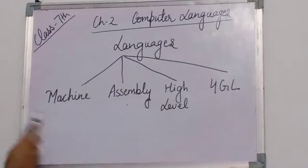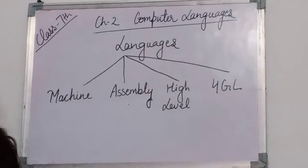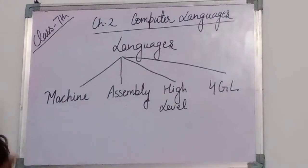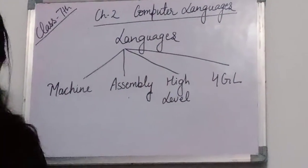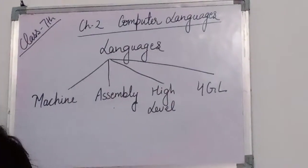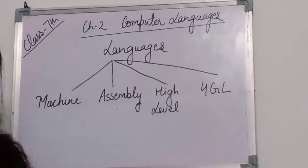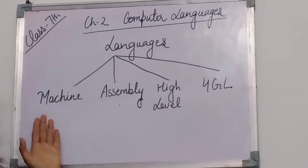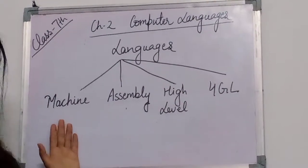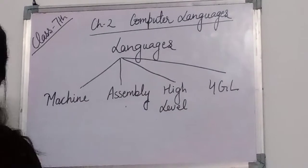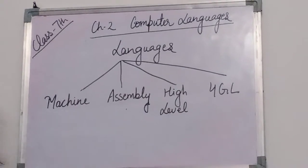In the first generation, that is machine language, we use zero and one — that is the binary numbers. It is understood only by the machine, so this is known as the machine dependent language.